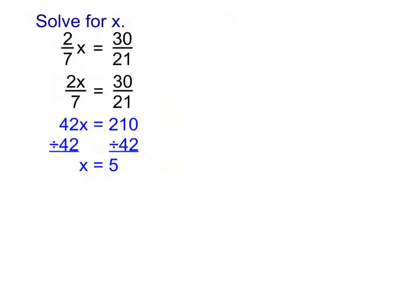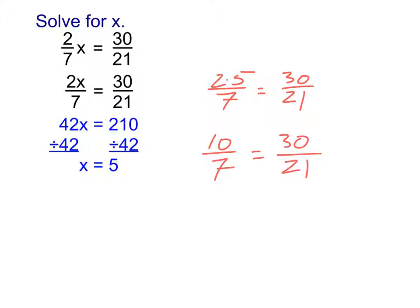Notice if I plug that 5 back in, I'd be doing 2 times 5 over 7 equals 30 over 21 — in other words, 10 sevenths equals 30 over 21. Notice what 30 over 21 reduces to: 10 sevenths, because I can divide top and bottom by 3. So yes, they are in fact equal. You get a decimal too, but it's kind of ugly on this one. It's telling us that 5 is the one number I could plug back in for x and have the equation actually be equal.